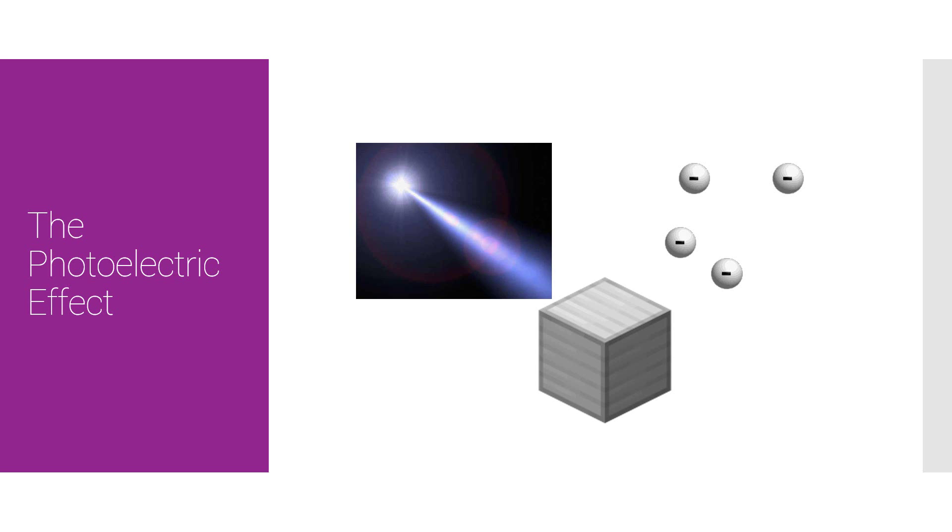How this works is that the free electrons on the surface of the metal absorb the energy from the light, and if enough energy is absorbed, the electron is released. This is what is known as the photoelectric effect, and the emitted electrons are called photoelectrons.